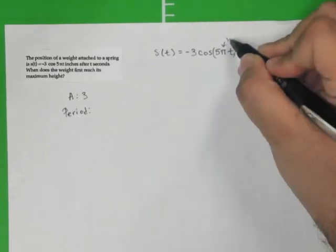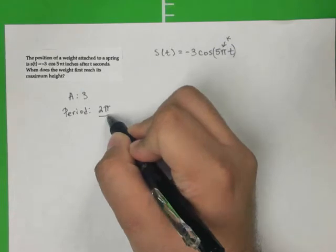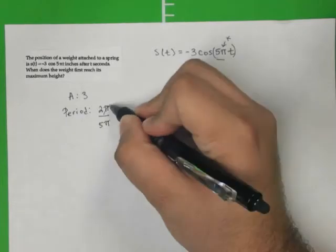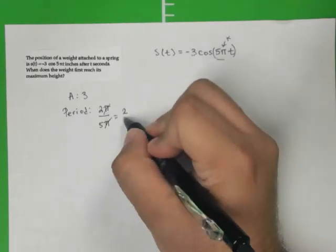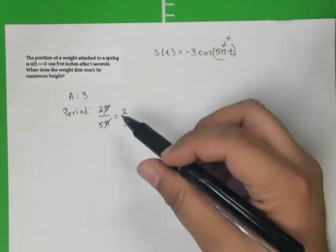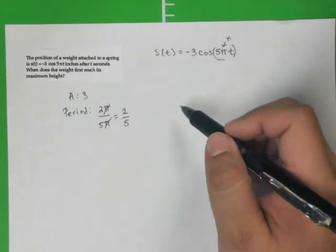So we're going to say, well, the period is going to be 2 pi over, and in this case, 5 pi. That gets rid of the pi's there for us, and we're left with 2 fifths, a period of 2 fifths. Okay, so 2 fifths of a second is where it completes one oscillation of this graph.